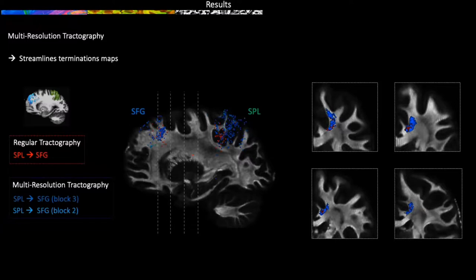With regular tractography recovering streamlines closer to the cingulum gyrus, and multi-resolution tractography showing more streamlines in the paracingulate gyrus and superior frontal gyrus, resembling what we know from animal tracing studies.